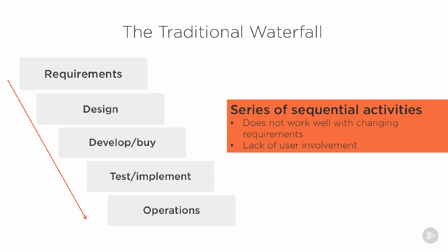The other issue is that this model does not encourage user involvement. In many cases, users were involved in the early phases of requirements and may have signed off on the design. But very often during the development and testing phases there is very little user involvement. This means the program may start to evolve in a way the users are not aware of. Also, users' needs can change, and those are not being communicated in a timely manner to the development team, taking the system away from the users' understanding.